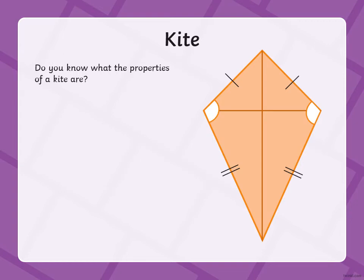A kite — do you know what the properties of a kite are? Okay, say them to me. That's right: four vertices and four sides. It has two pairs of equal sides and has diagonal lines.